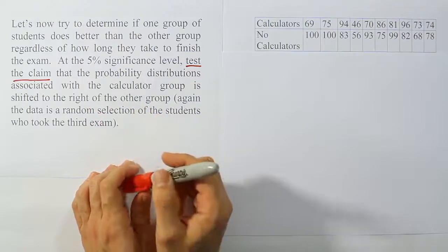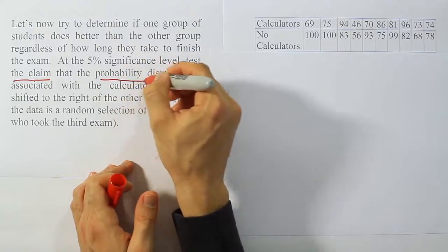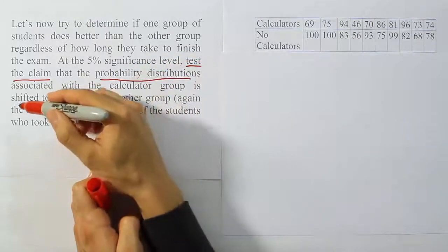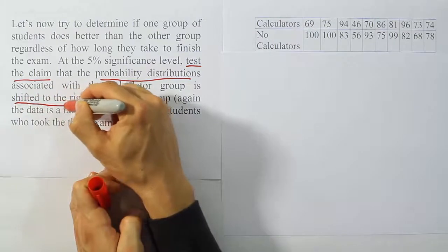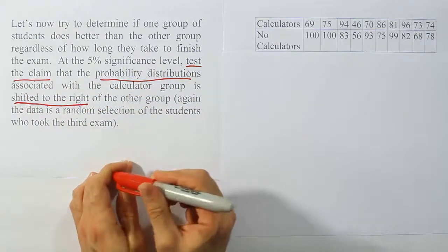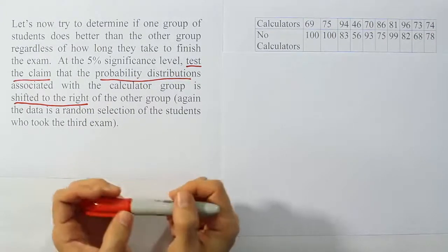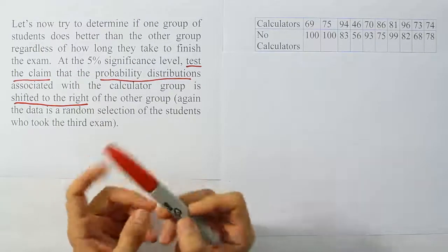Okay, so what we're looking at here then, if you look at it here, is they're saying that we're talking about the probability distributions being shifted to the right of the other one. So we're saying the calculator group is shifted to the right. So what that essentially would mean is that the median for the calculator group would be higher than the median for the non-calculator group.